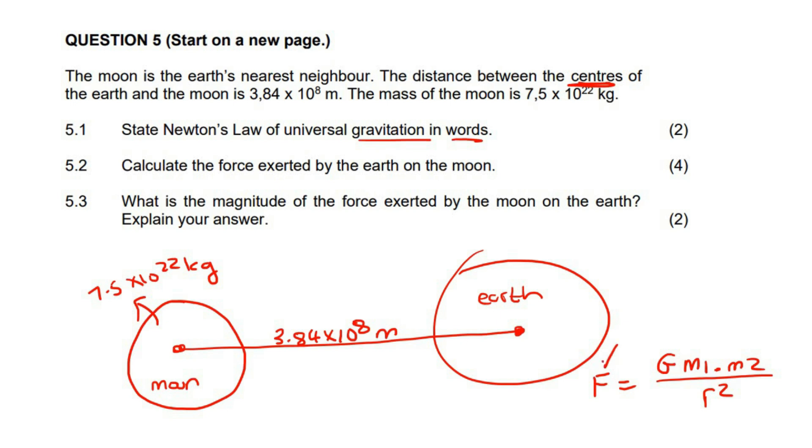It tells us that the force of attraction between objects is directly proportional to the product of their mass. There's product, and inversely, which means at the bottom, inversely proportional to the distance between, this should actually be a D, because it's not always radius. So, inversely proportional to the distance between their centers, squared.